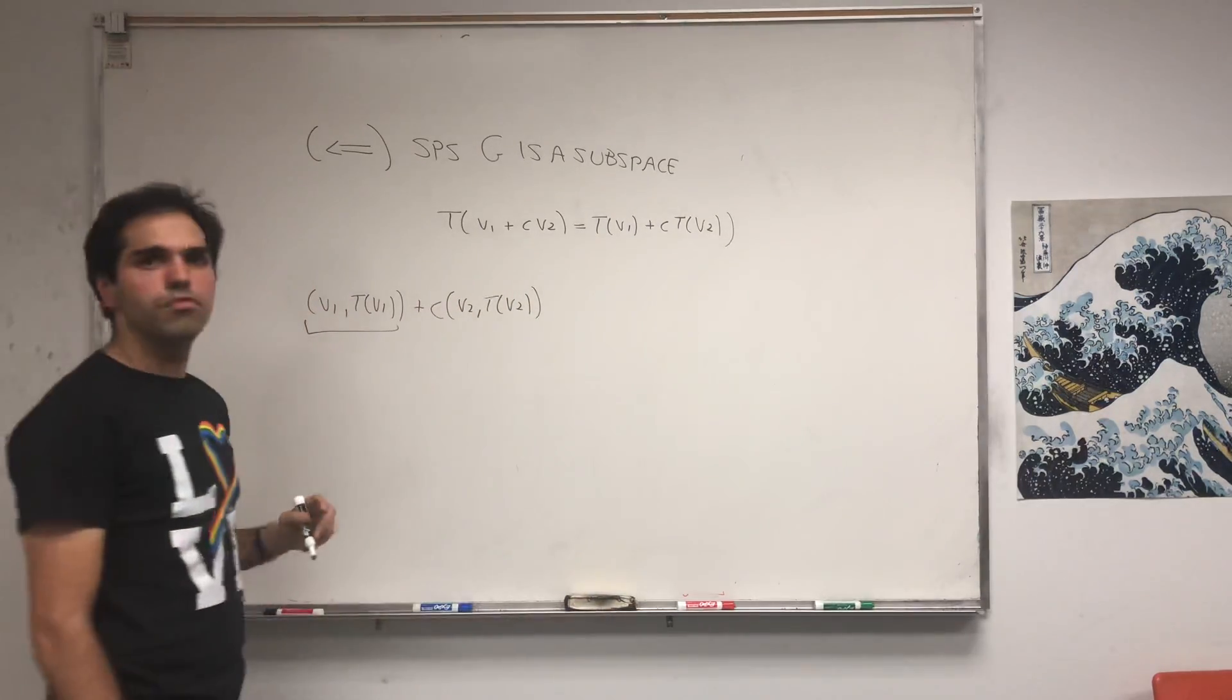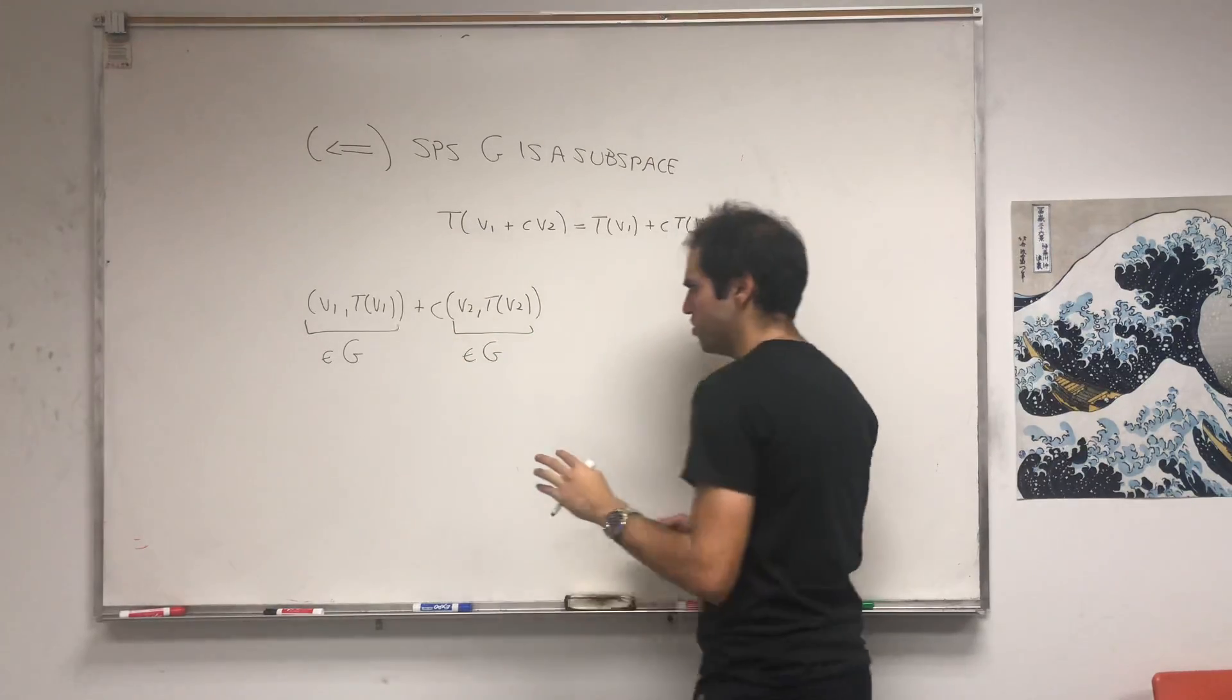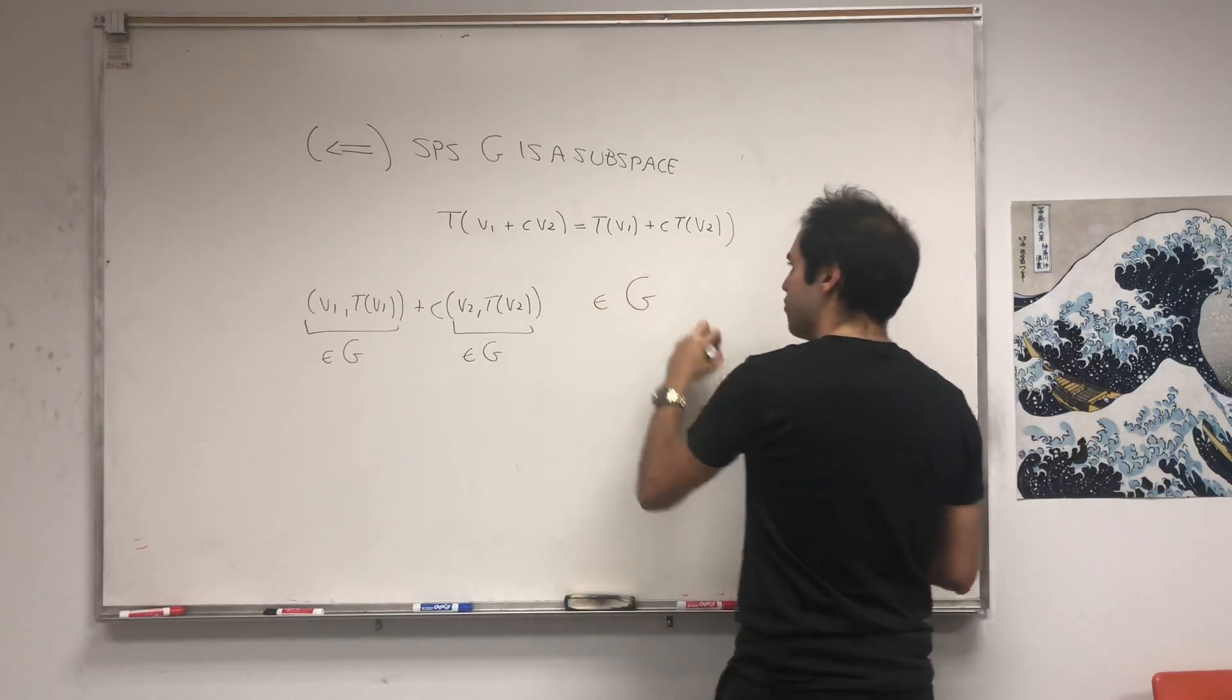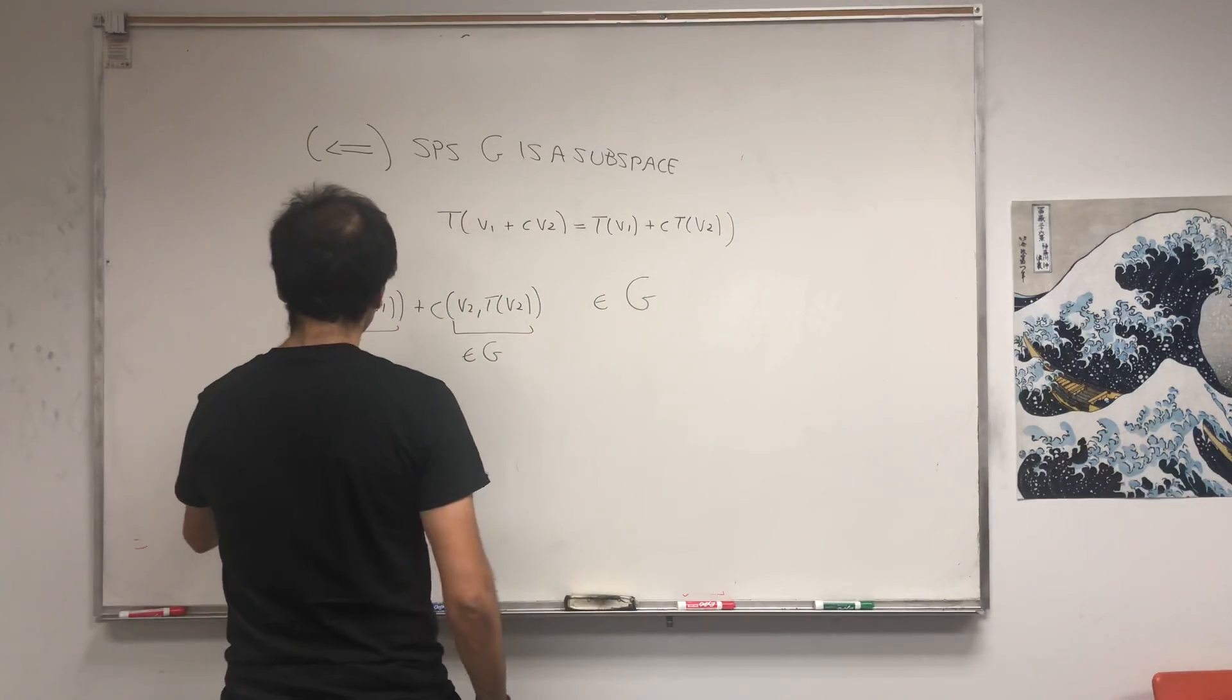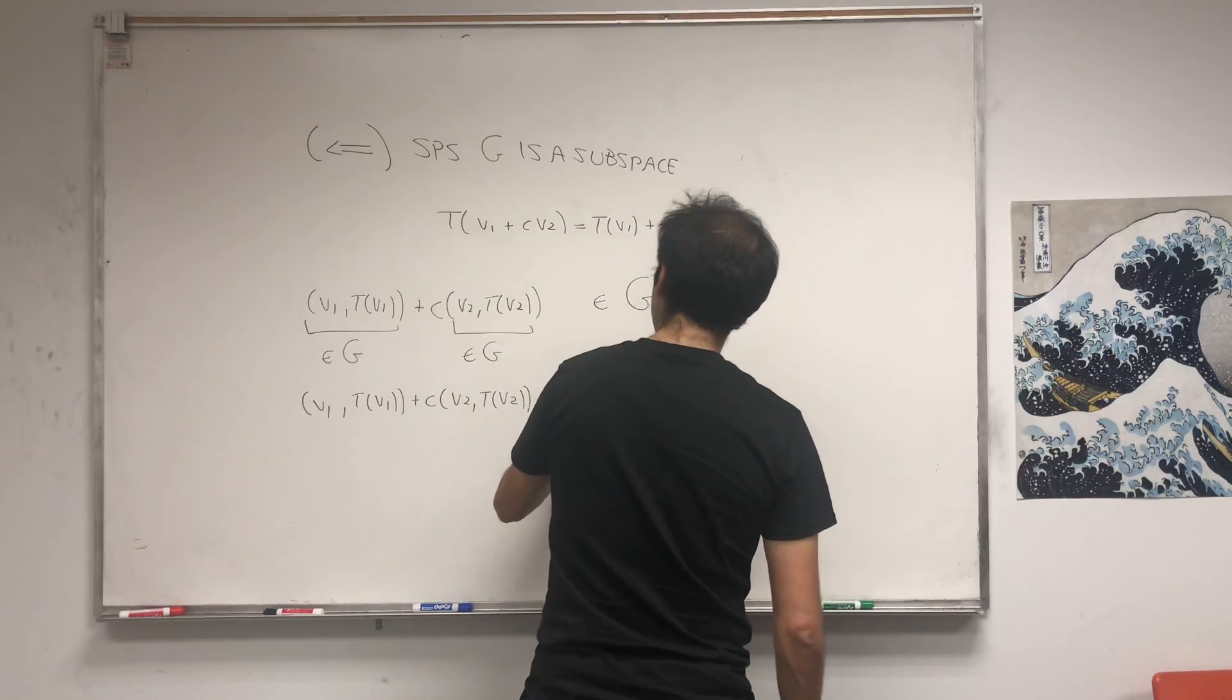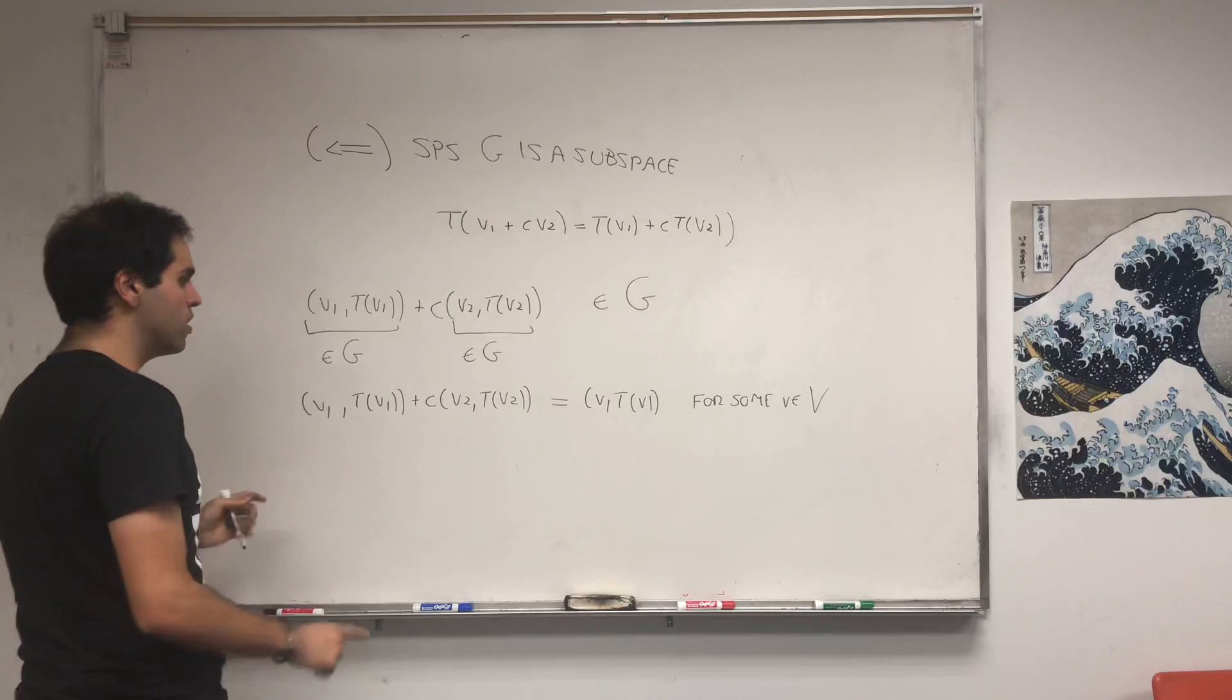Consider the following points: take (v₁, T(v₁)) + c(v₂, T(v₂)). This is of the form (v, T(v)), and that's in your graph by definition. This is also of the form (v, T(v)), and it's also in the graph. Now, if the graph is a subspace, it means it's closed under linear combinations. So this is in the graph, which means by definition that this point (v₁, T(v₁)) + c(v₂, T(v₂)) is of the form (v, T(v)) for some v in V. But it turns out we can figure out exactly what v is.